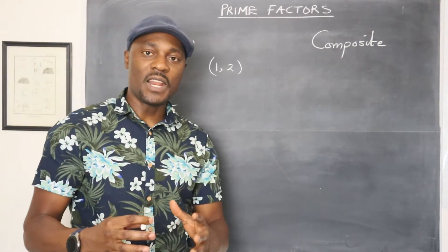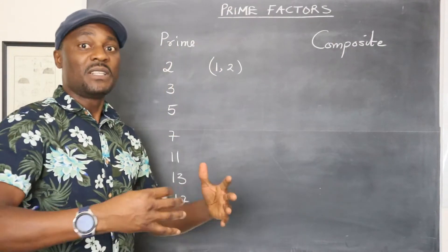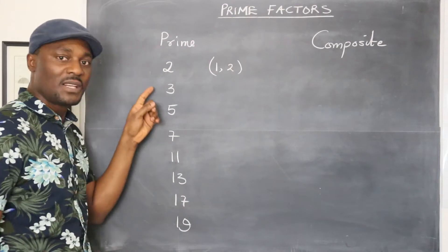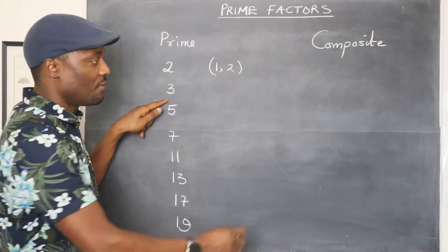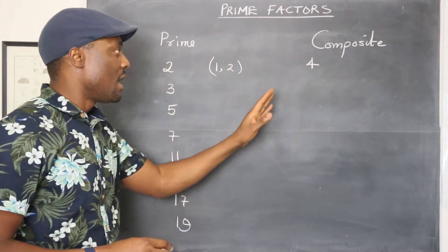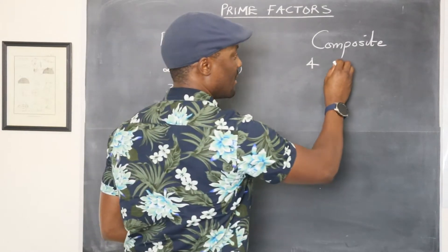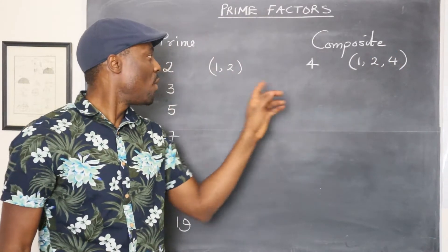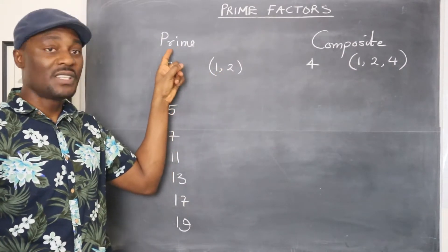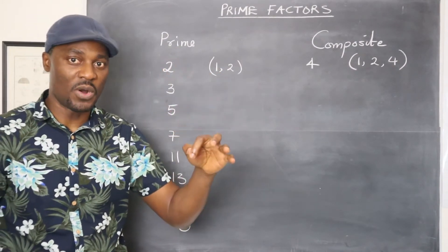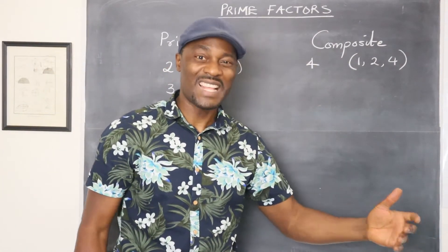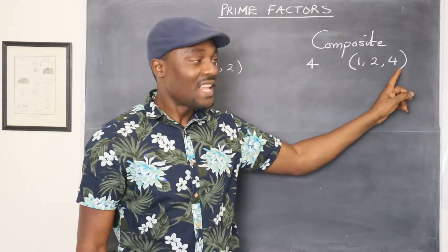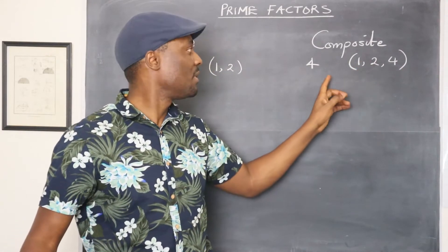So now any other number that we deal with can be divided by maybe one or two or three more numbers apart from the ones that we've written. So for example, let's pick the numbers that we skipped. I skipped four here. So four is a composite number. If I write four here, what numbers will divide four? We know that four can be divided by one, can be divided by two, can also be divided by four. Now that we have more than two factors, which is the definition of prime numbers. For composite numbers, it will have more than two factors. That's the best way for you to see composite numbers. It will have more than two factors and it will be one, the number itself and another number or some other numbers that are capable of dividing it.